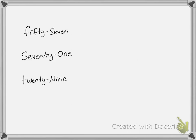We also have 57. So 57 sounds like 50, and then a 7. So we would just write 57. 71 would be 71, and 29 is 29.